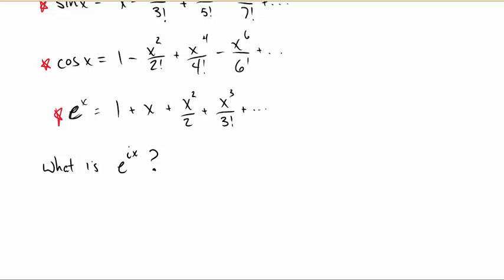Well, we can make a substitution into e to the x, so this is equal to 1 plus ix plus i squared x squared over 2 factorial, if you will, plus i cubed x cubed over 3 factorial, plus i to the 4th x to the 4th over 4 factorial, plus...